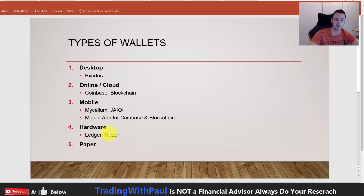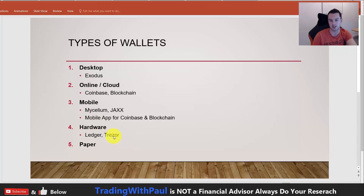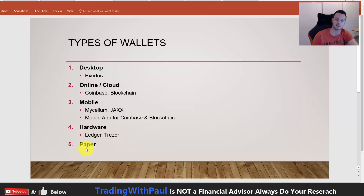Then you have hardware wallets, which are the most secure type of wallets. You have the Ledger and the Trezor. They are hardware wallets because you actually have a physical device. With a hardware wallet you have to have the physical device plugged into your machine to actually access the coins, so they are the most secure of all. For any bigger amounts of coins, I would suggest you invest in a hardware wallet and store them there.